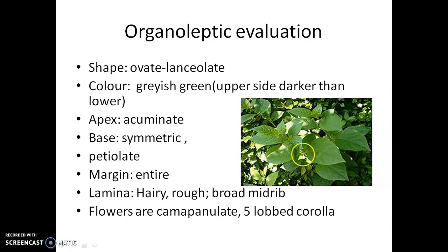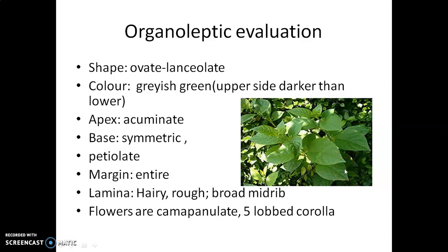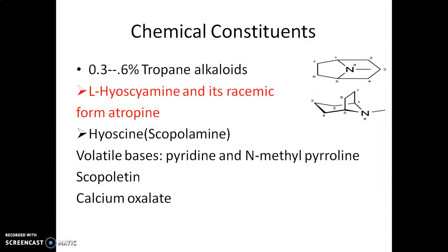For organoleptic evaluation, the leaf and flowering tops are used. The leaf shape is ovate and lanceolate, color is grayish-green — the upper side is darker than the lower side. The apex is acuminate, the base is asymmetric, and the leaf contains a petiole. The margin is entire, the lamina is hairy and rough due to the presence of calcium oxalate crystals. Flowers are campanulate (bell-shaped) with a five-lobed corolla.